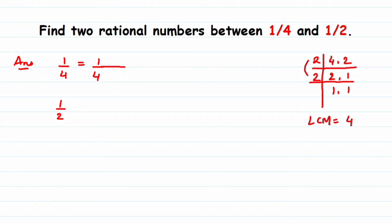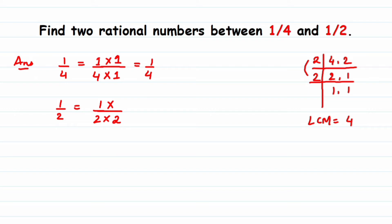We need to make the denominator 4. Since 1/4 already has denominator 4, we just multiply numerator and denominator by 1, giving 1/4. For the second number 1/2, we need to multiply by 2 to get denominator 4 — so 2 times 2 is 4 — giving us 2/4.